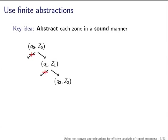So instead of blindly exploring the zone graph, you want to abstract each zone — you inflate it with respect to an abstraction function, which adds extra valuations. The aim is to come up with a finite graph that represents the behavior of this potentially infinite zone graph. You have to make sure that these extra valuations don't enable transitions that weren't enabled before, and if a transition was enabled before it should still be enabled.